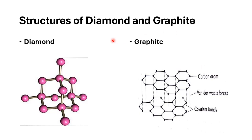Here we have a structure of diamond and graphite. On the left side we have diamond. On the right side we have graphite. This is the structure of diamond. If you look well, the atoms in this structure are tightly bonded one to another. But in graphite, their atoms are also tightly bonded, but one layer is free, according to van der Waals forces.